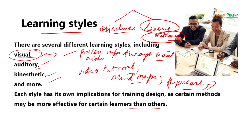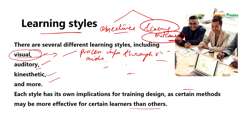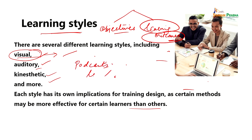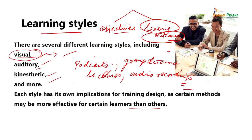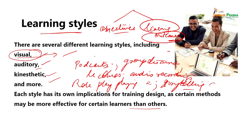Auditory learners learn best through listening and verbal instructions. They prefer to absorb information through lectures, discussions, podcasts, and audio recordings. When designing training for auditory learners, consider incorporating engaging lectures, group discussions, debates, role-playing activities, and storytelling or narrative-based learning experiences, which can do a lot of good for them.